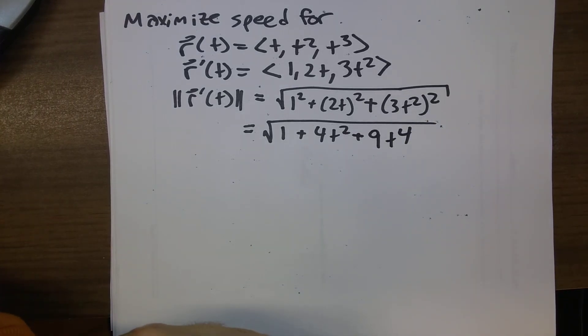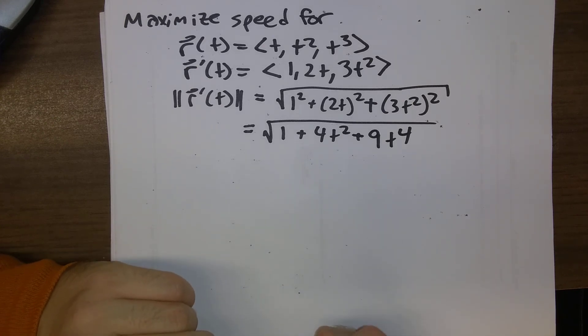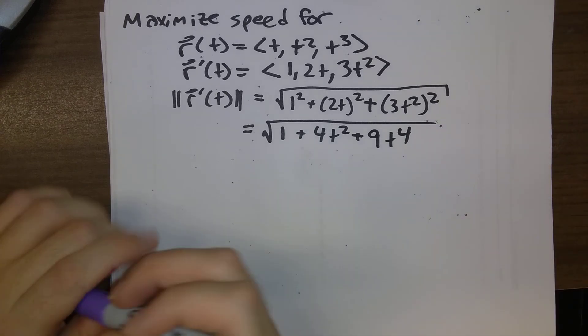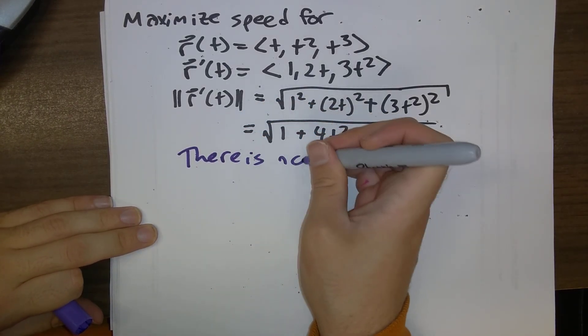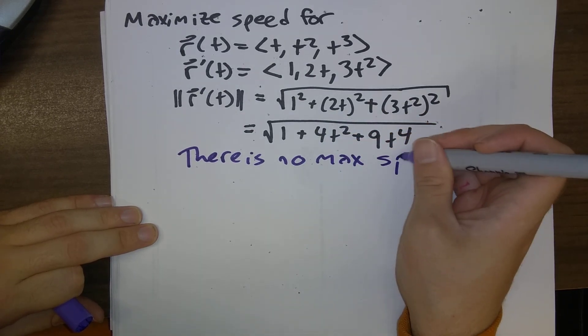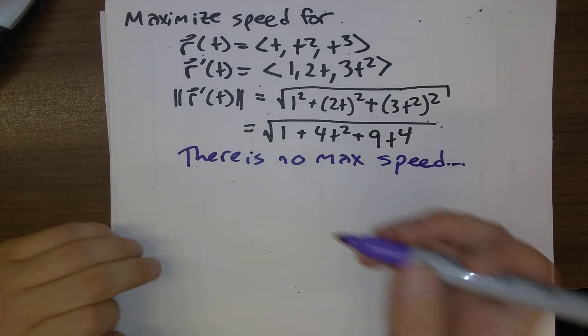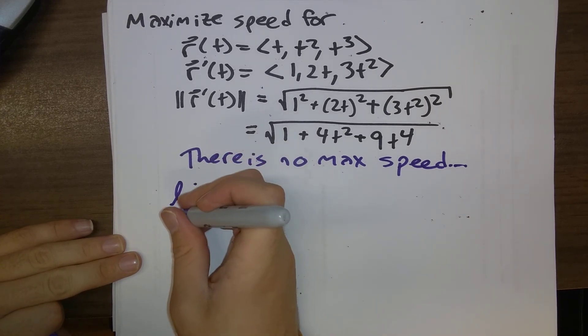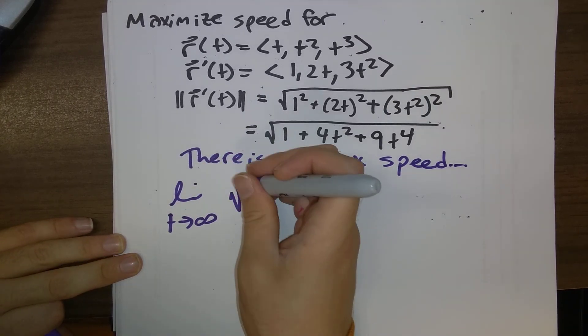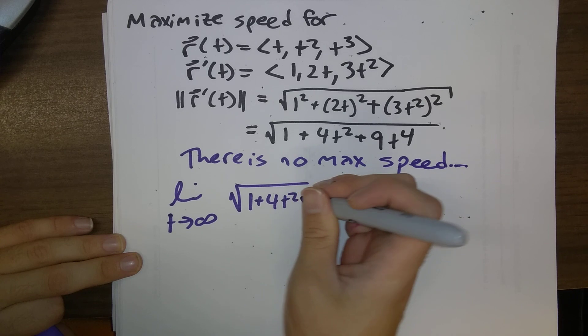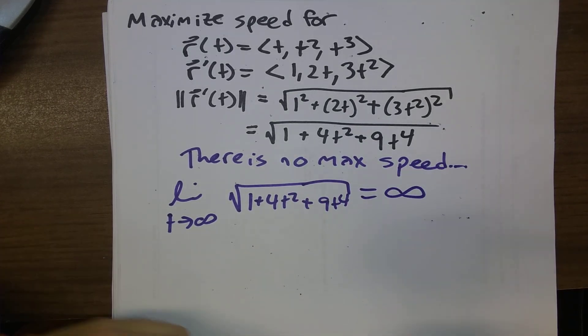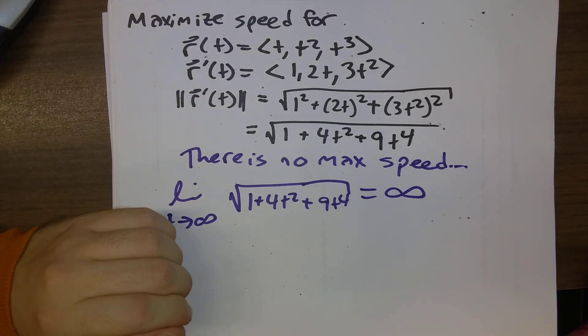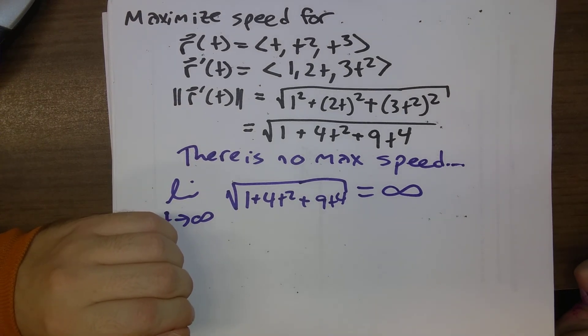And so, actually, this is an interesting question. I didn't write this question. I borrowed it from somebody else. This looks like there is no maximum speed. So, a bit of a red herring. Because we can see here that the limit as t goes to infinity of 1 plus 4t squared plus 9t to the fourth. That is infinity. So, we can make the maximum speed as big as we want.